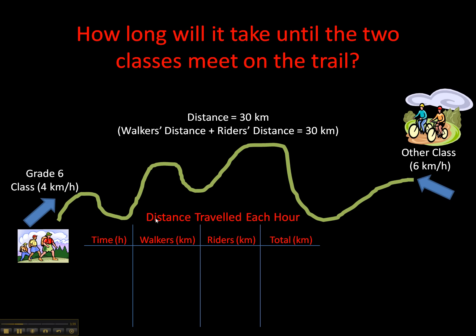This table of values shows the distance traveled each hour. We have time here, measured in hours — that's what the H stands for. The walkers' distance is measured in kilometers, the riders' distance is measured in kilometers, and the total distance is also measured in kilometers.